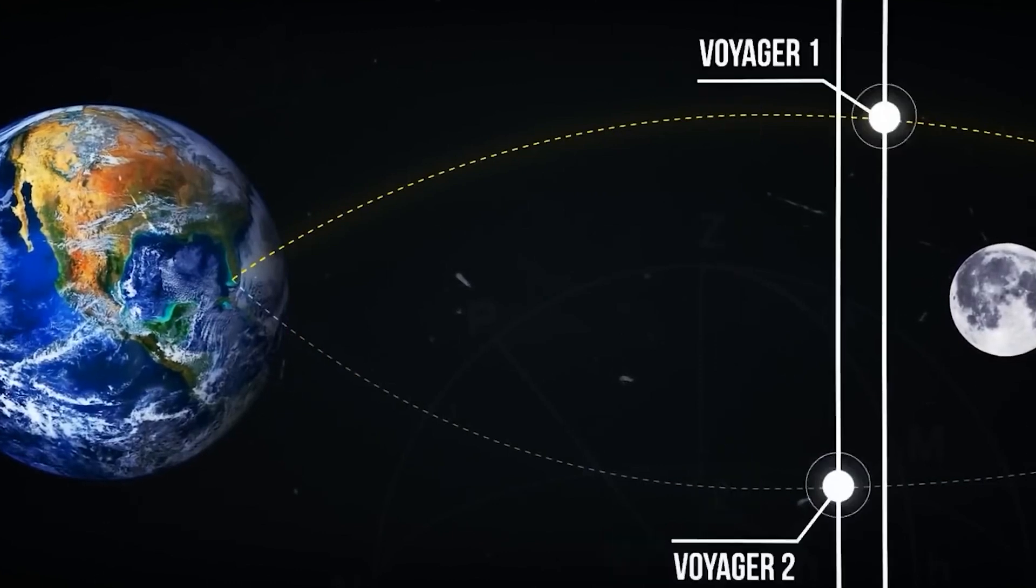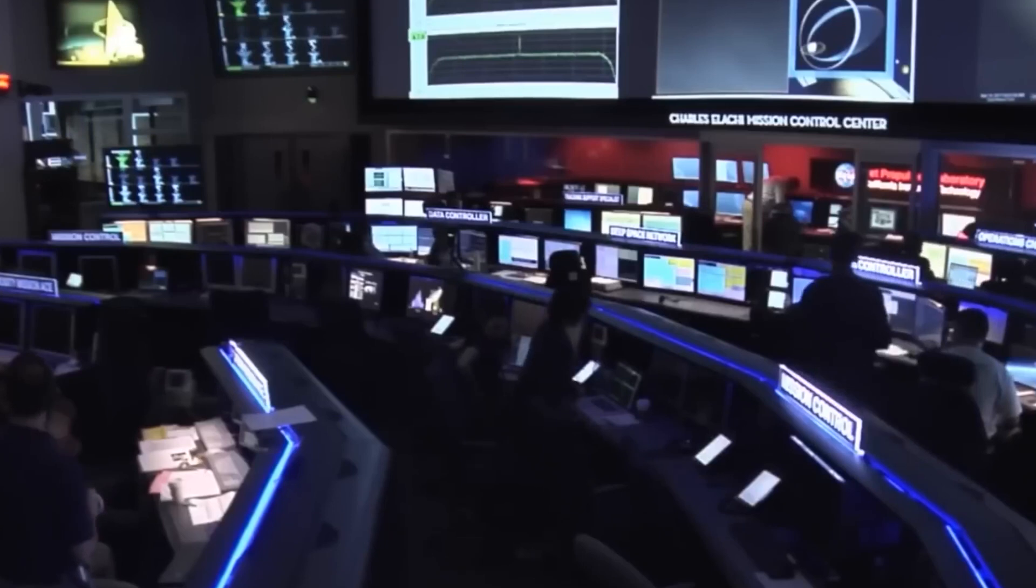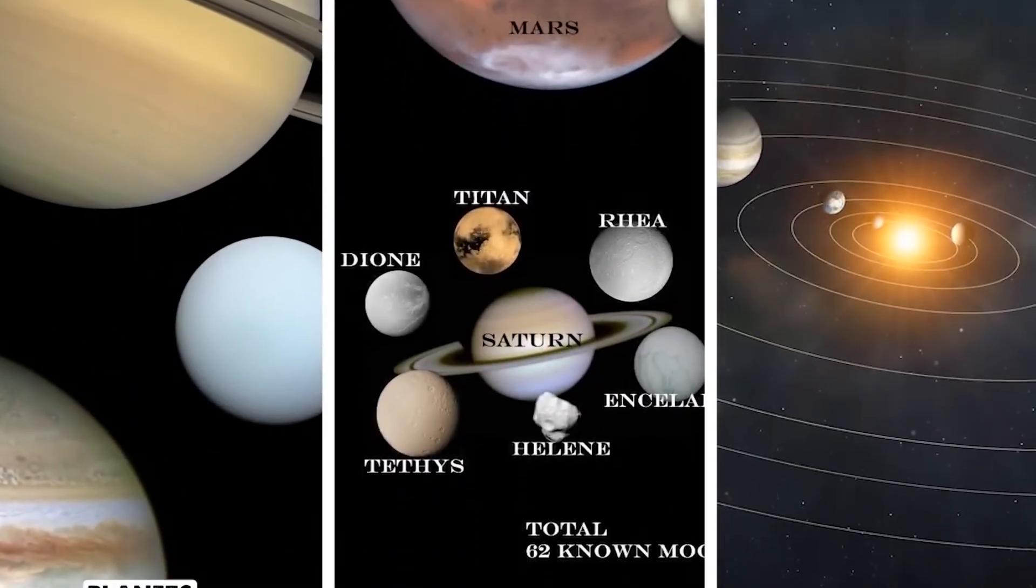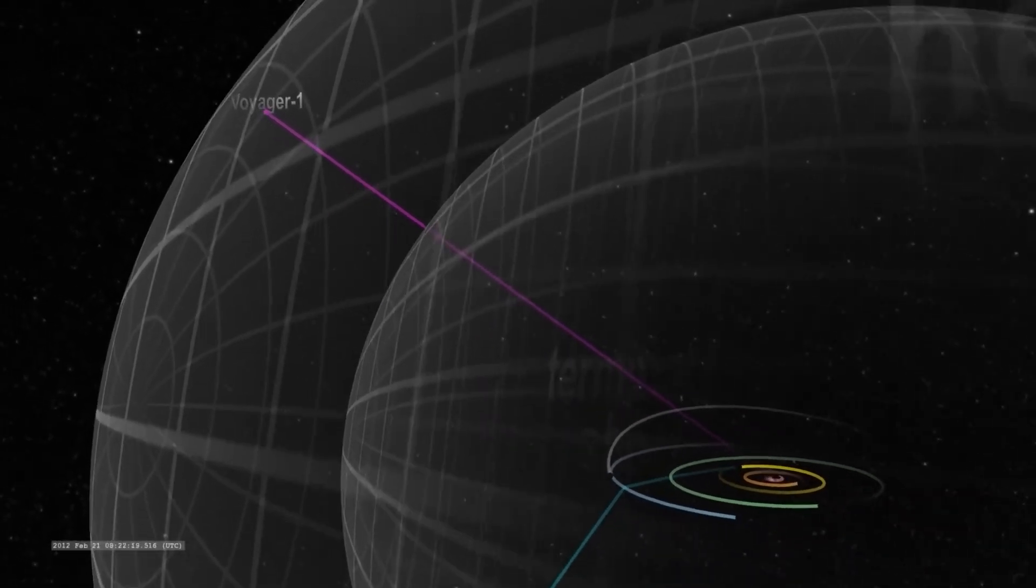In the summer of 1977, with the aim of taking advantage of this cosmic alignment, little did they know that these twin explorers would break all records in the history of space missions.